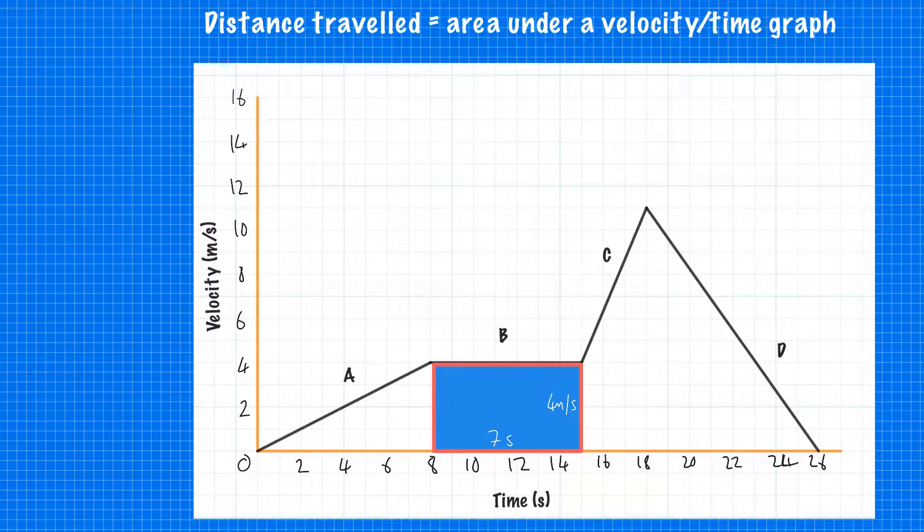Work out the height and the length. We can see the height is 4 metres per second, and the length is 7 seconds. If we multiply those together, we can work out the distance traveled was 28 metres in that section.